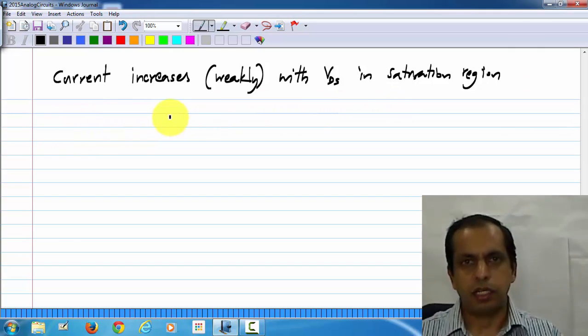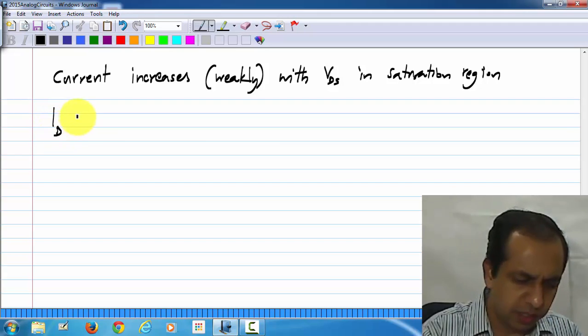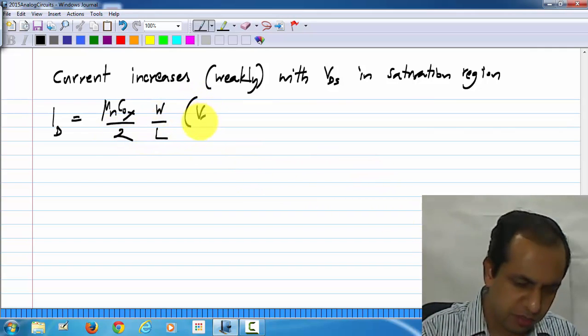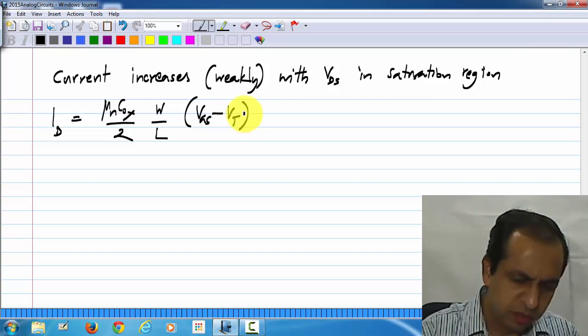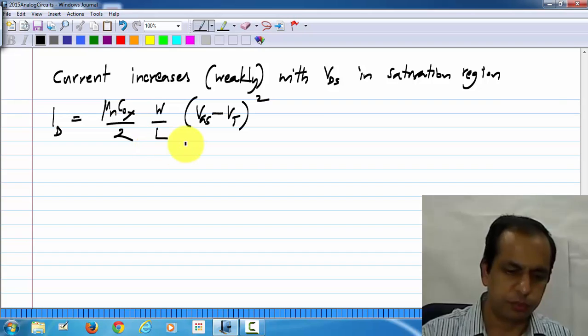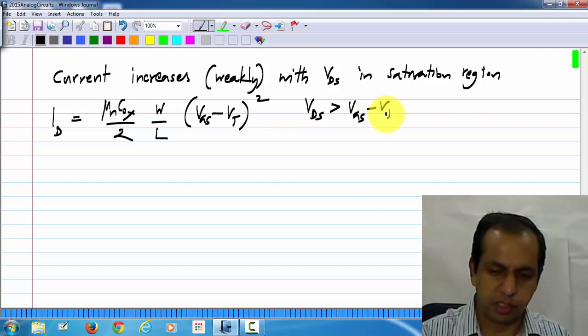And if you attend courses on device physics, you will understand why this is the case. The saturation region current equation was mu_n C_ox by 2 W by L (VGS minus VT) square. This was for saturation, which is to say VDS more than VGS minus VT.